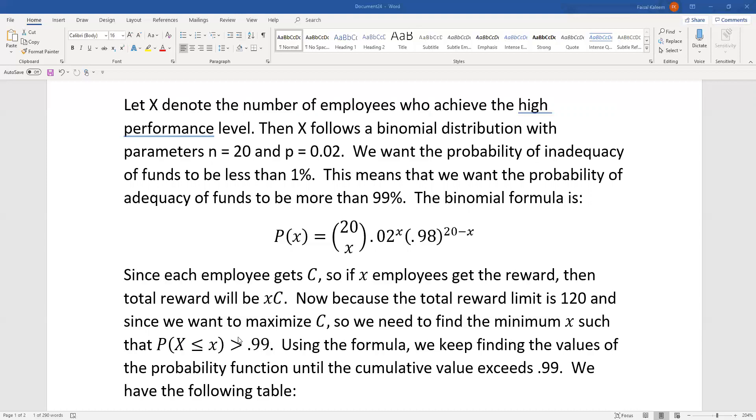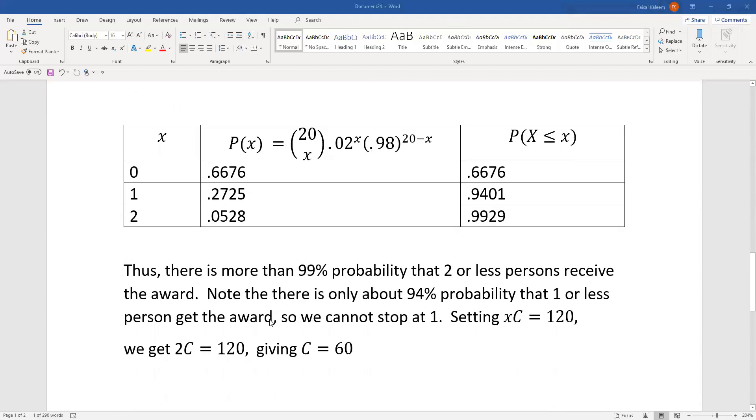We tabulate the different values. When X is 0, we substitute 0 here to get this probability, and that will also be the cumulative probability at the zero level. Then for one we get this one, and so the cumulative would be the addition of these two, which is 94%. We have to keep going till we cross 99%, which we do once we also add in the X equals 2 probability. This is saying that there's more than 99% probability that two or less persons will receive the award.